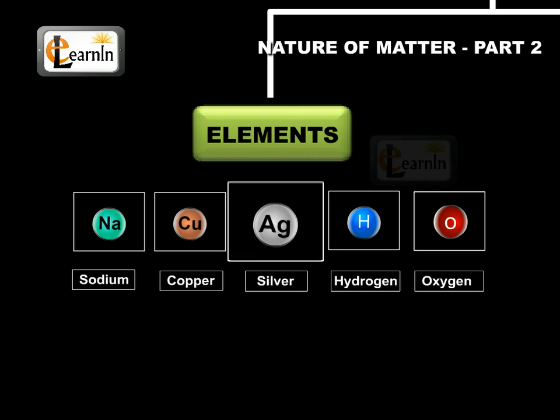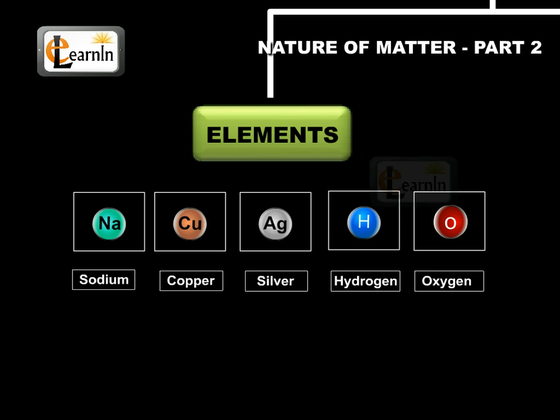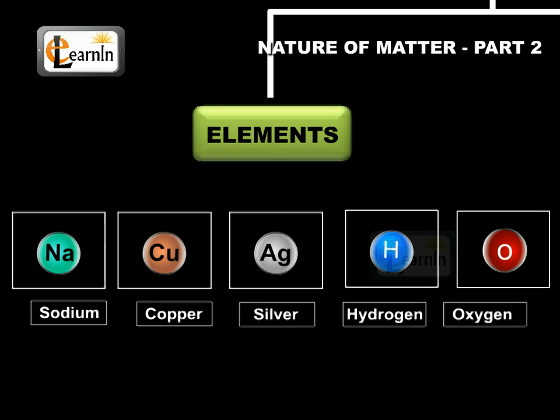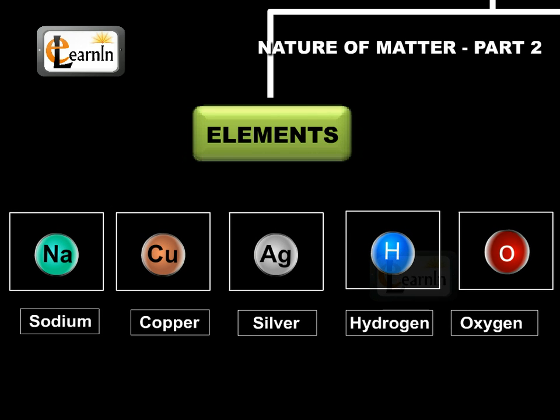Sodium, copper, silver, hydrogen, oxygen, and others are some examples of elements. They all contain atoms of one type. However, the atoms of different elements are different in nature.